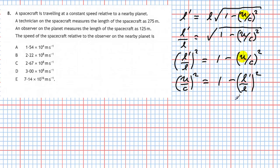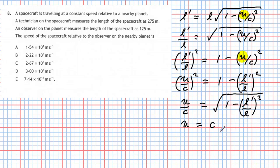To get u out of this, we take the square root. The square root of (u/c) squared is simply u/c, which equals the square root of one minus (l-prime/l) squared — remembering to square the whole bracket. To tidy up: the speed u equals c multiplied by the square root of one minus (l-prime/l) squared.